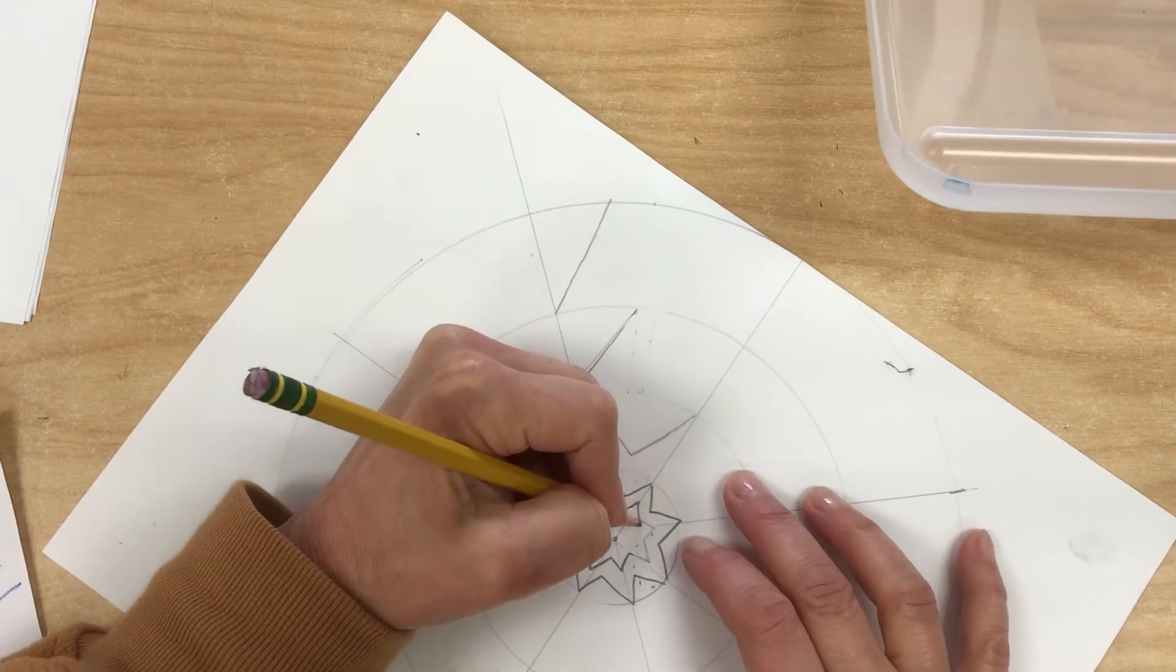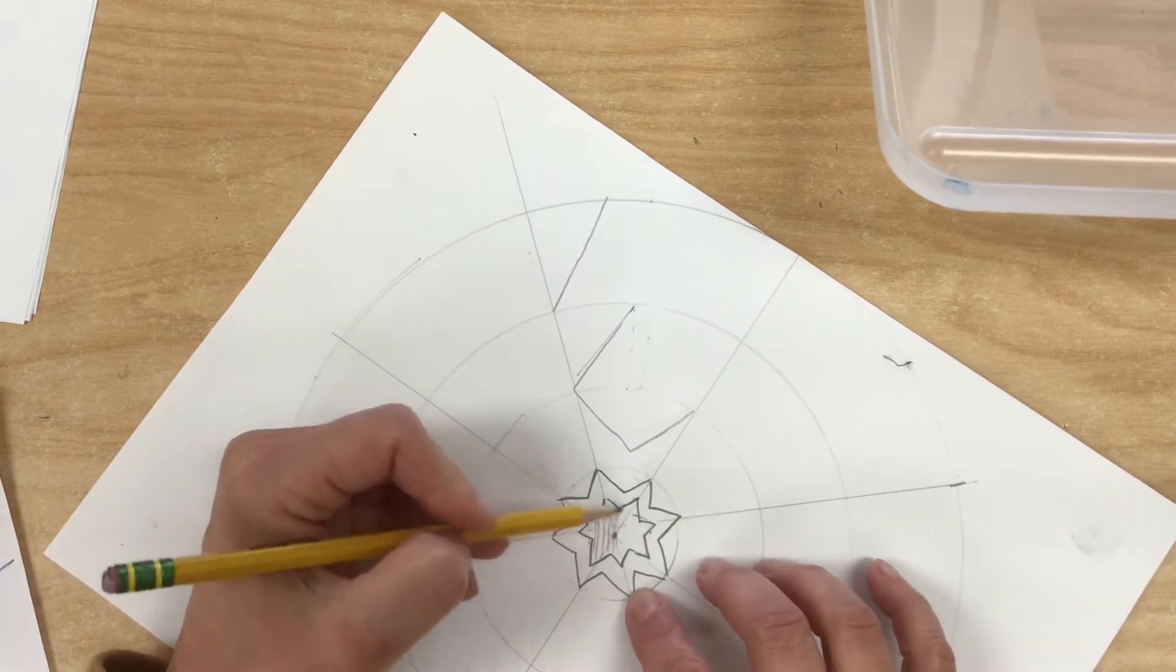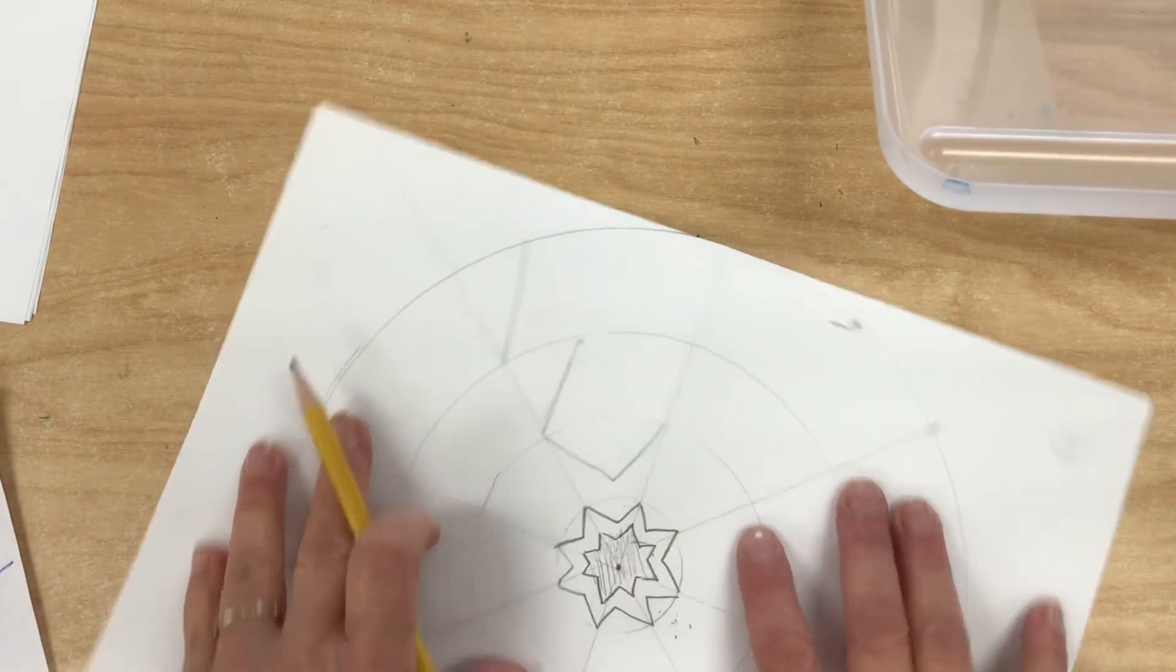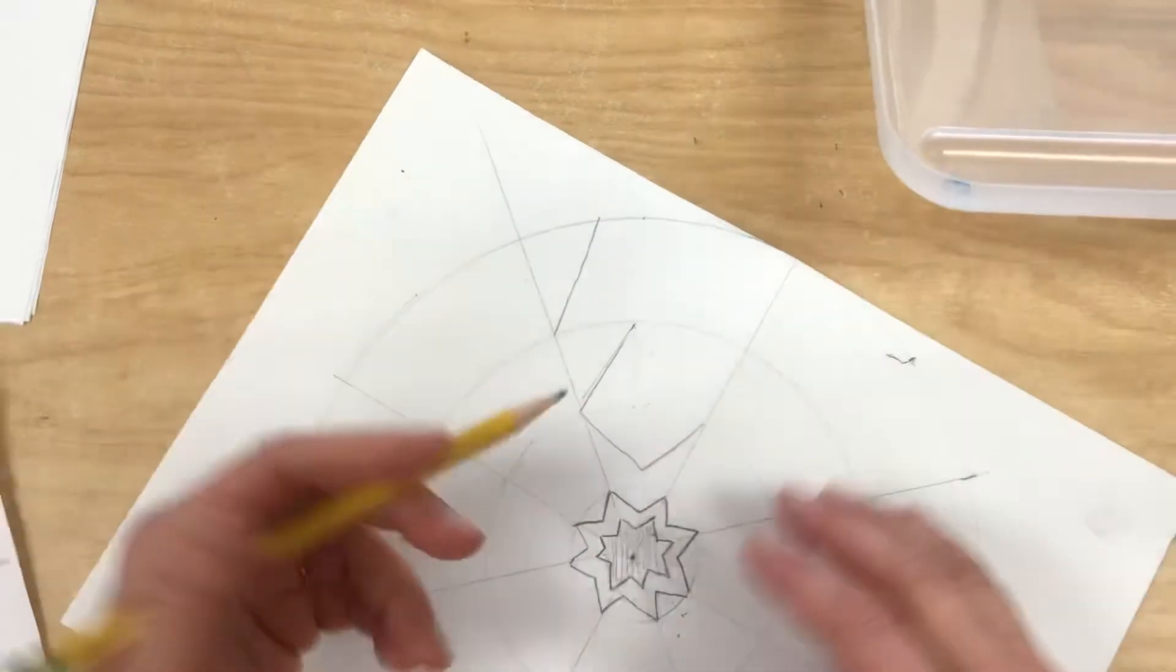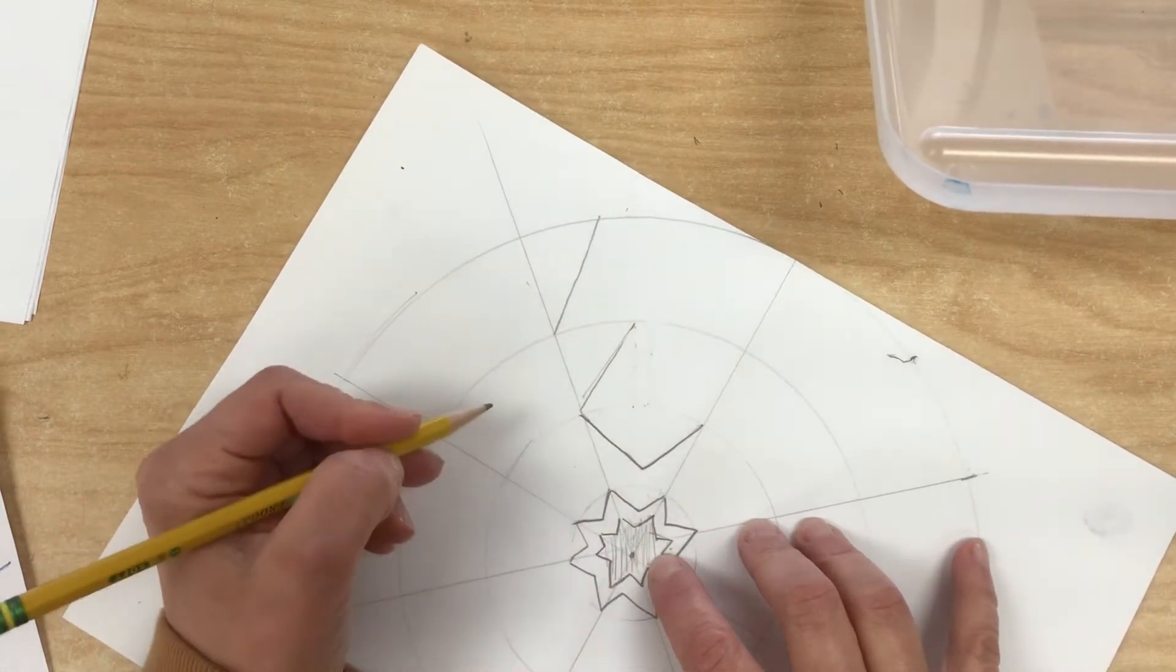Also, you can color the spaces in between your designs, which is called the negative space. This would be the negative space. Now it's doubled, good. Move on to the next one.